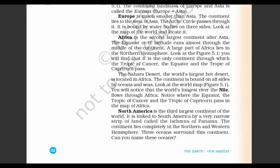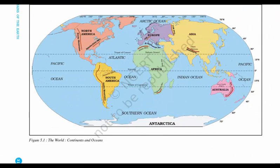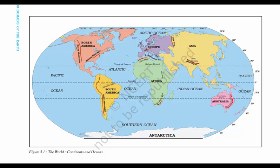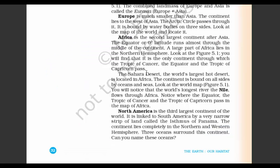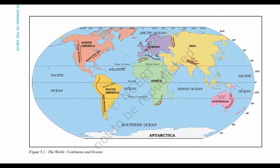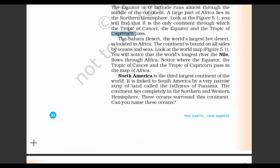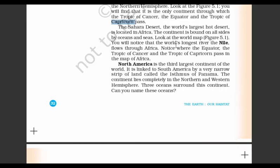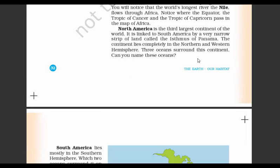Coming to Africa, it is the second largest continent. It is the only continent through which the Tropic of Cancer, Equator and Tropic of Capricorn all pass — no other continent has all three lines in a straight run through it. This continent also has the Sahara Desert, which is the world's largest hot desert, and it hosts the world's longest river, the Nile.